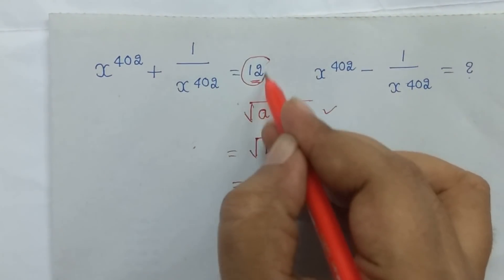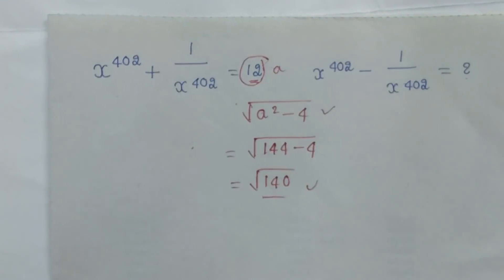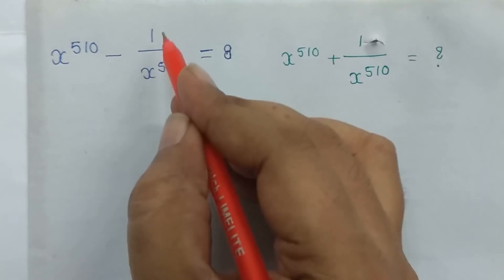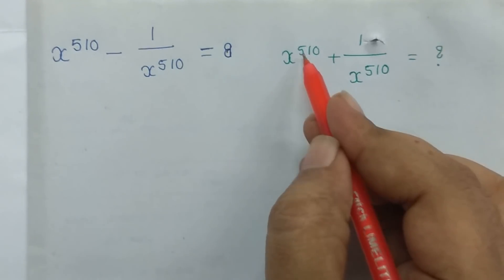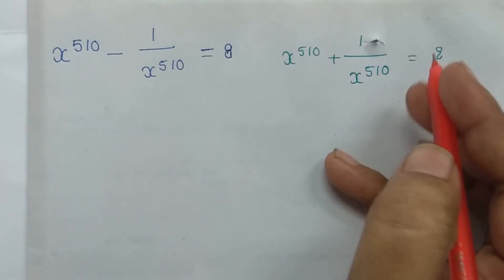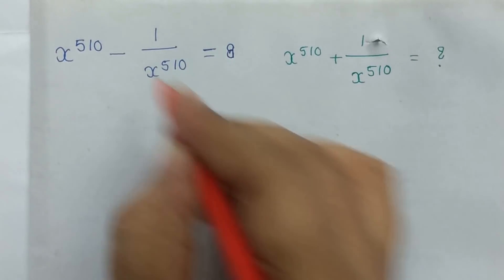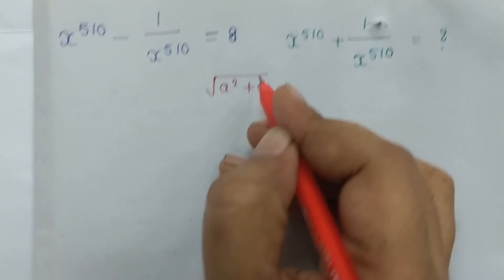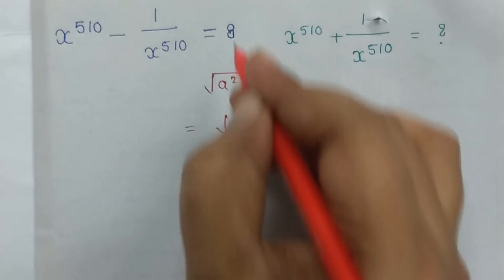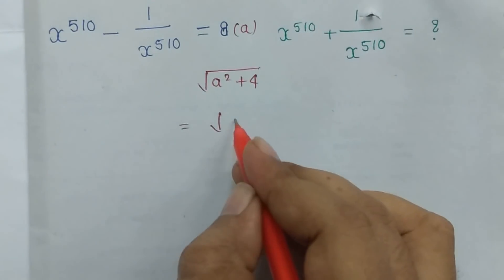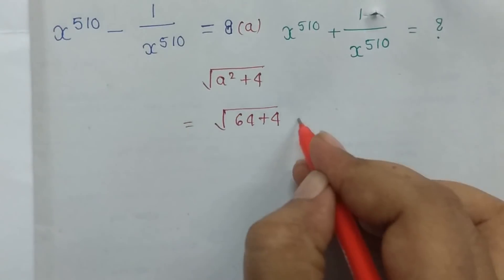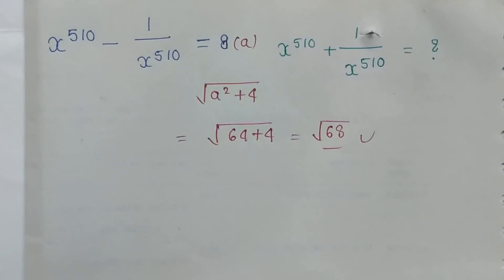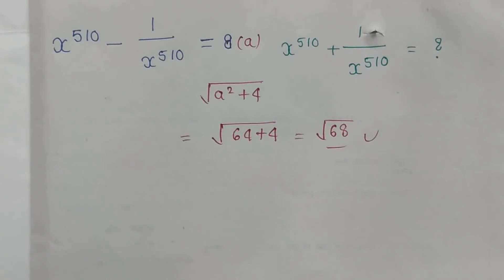Next: x^510 - 1/x^510 is equal to 8. Find x^510 + 1/x^510. This is the shortcut: the question has minus, so the formula is plus — root(a² + 4). So root(64 + 4) = root(68). That is the simple shortcut answer.